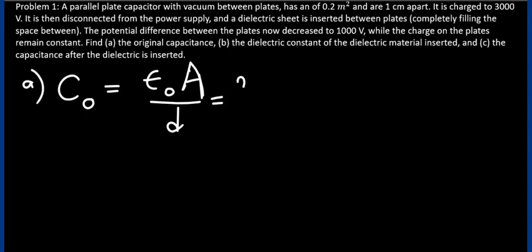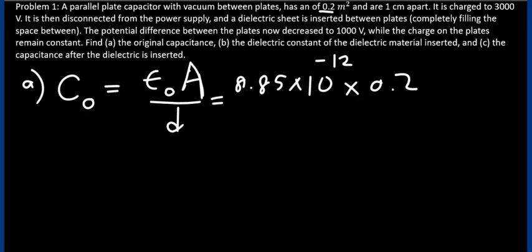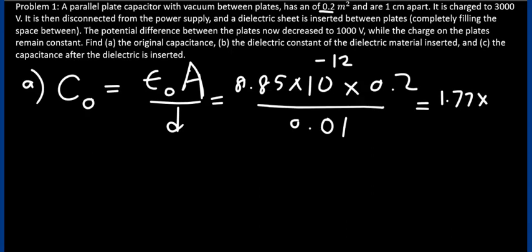The permittivity of vacuum is 8.85 × 10⁻¹². The area is 0.2 meters squared. The separation is 1 cm, which converted to meters is 0.01 meter. And that gives you 1.77 × 10⁻¹⁰ farads.